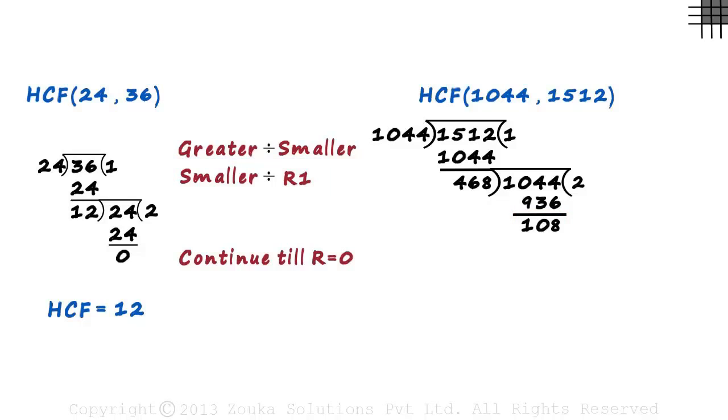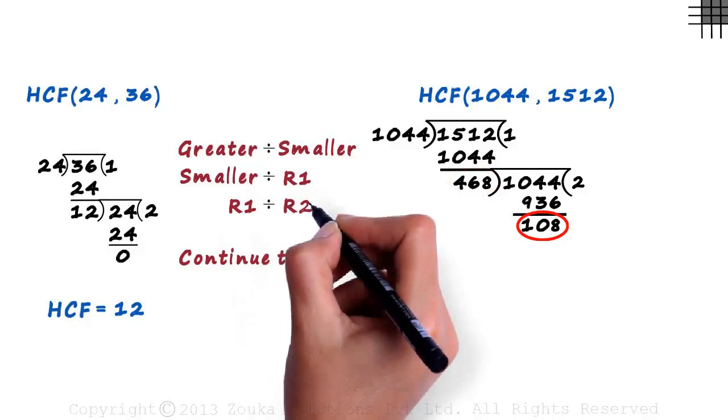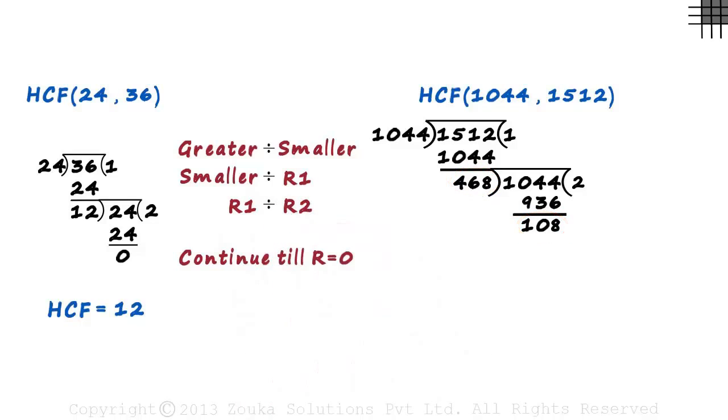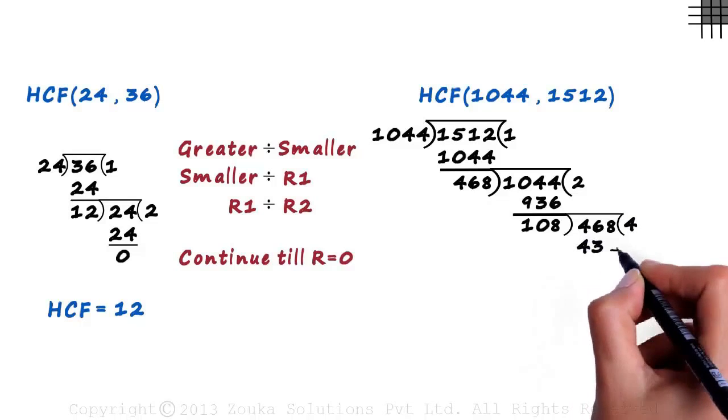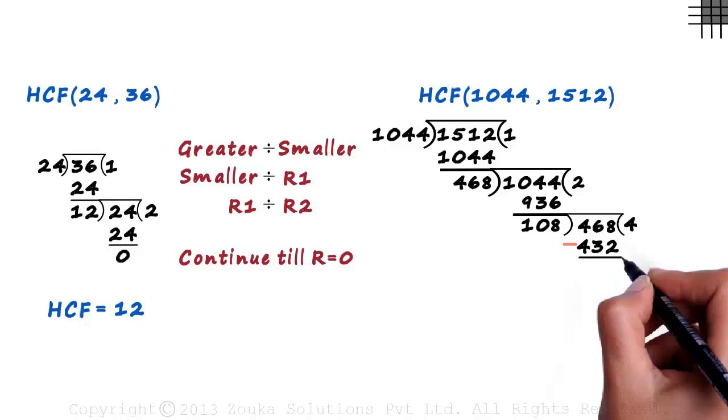Well, it's easy. The first remainder becomes the dividend, and the second remainder becomes the divisor. We can write the next step as R1 divided by R2. The first remainder is 468, so we write it here. This is R1 divided by R2. This is the third division we are performing for this example. 108 times 4 equals 432, and 468 minus 432 equals 36.